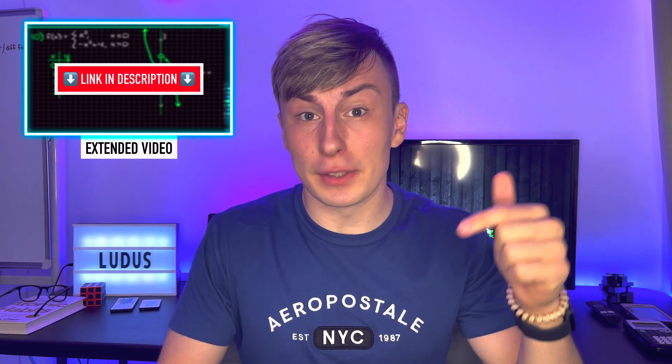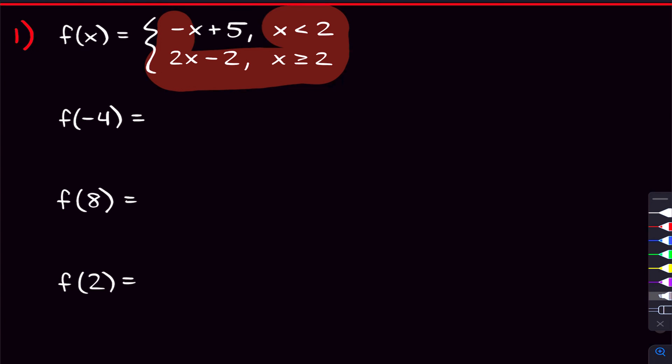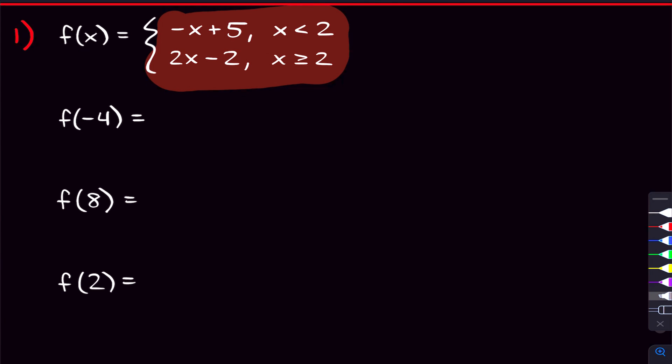We'll also be doing eight problems with graphing piecewise functions in that extra video — link in the description. So starting with this first problem, we're given this piecewise function and we're starting by trying to find f of negative four.